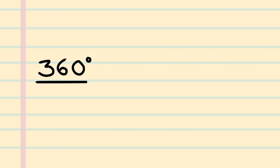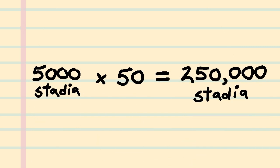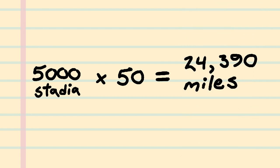Knowing that this angle was equivalent to the inside angle of the arc, Eratosthenes took the total degrees in a circle, 360, and divided it by the 7.2 degrees and found that the section of the earth he measured was only one-fiftieth of the earth's circumference. He then multiplied his measured distance by 50 and estimated the circumference of the earth to be 250,000 stadia, or about 24,390 miles.